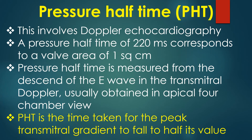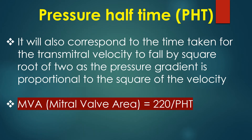Assessment of mitral valve area by pressure half-time involves Doppler echocardiography. A pressure half-time of 220 ms corresponds to a valve area of 1 square cm. Pressure half-time is measured from the descent of the E wave in the transmitral Doppler, usually obtained in the apical four-chamber view. It is the time taken for the peak transmitral gradient to fall to half its value, which also corresponds to the time taken for the transmitral velocity to fall by the square root of 2, as the pressure gradient is proportional to the square of the velocity.